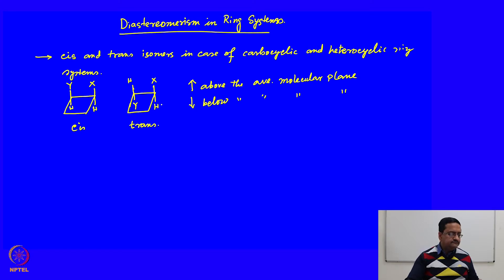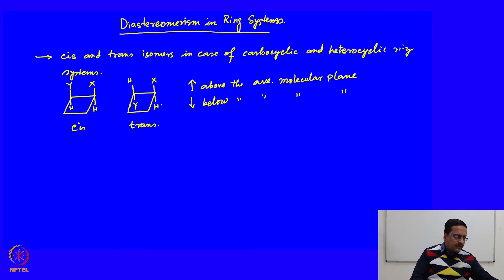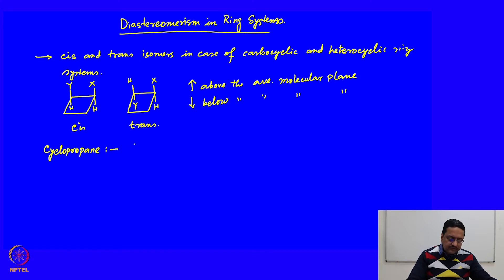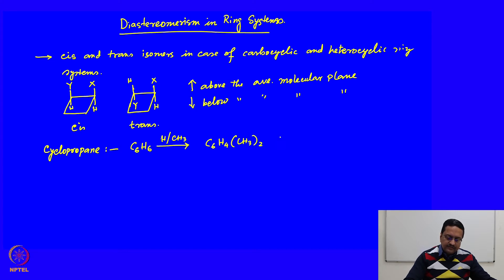To understand these isomers in terms of whether they are enantiomers, diastereomers, or meso compounds, we need to approach it systematically. Let us start by considering a cyclopropane system, which is the smallest ring having the formula C3H6. When we replace 2 hydrogens with a methyl group, we get dimethylcyclopropane.